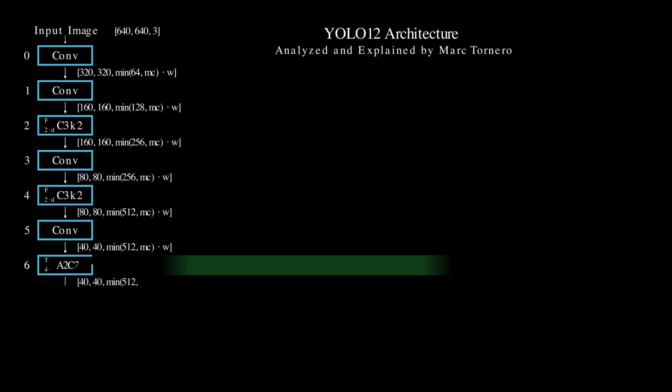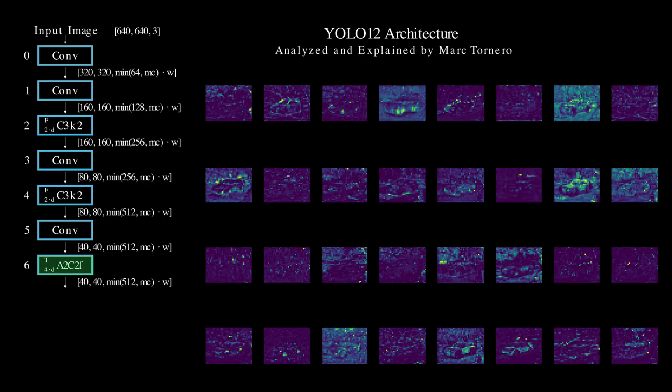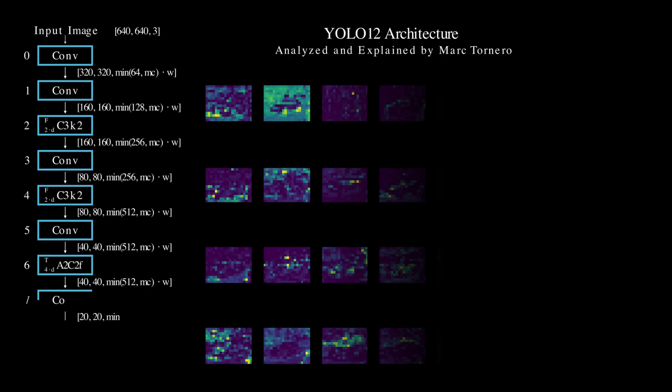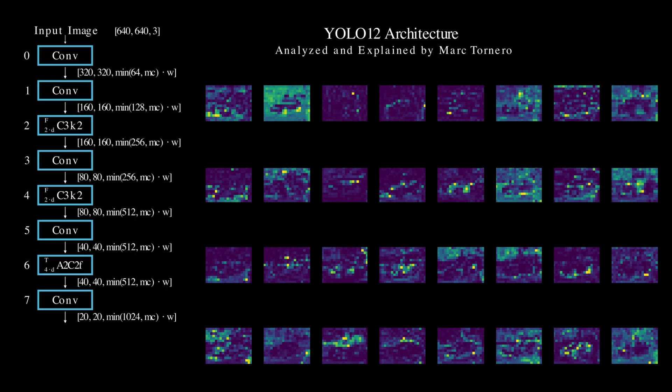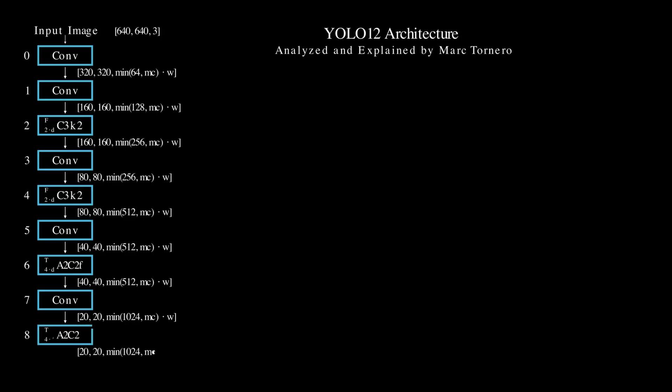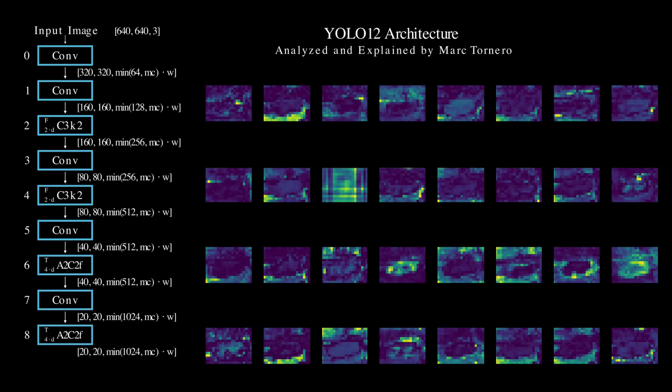The addition of the new A2C2F block builds on a previous module from its predecessor, which we'll discuss shortly. It introduces the area attention mechanism designed to enhance the model's ability to focus on the most relevant regions of the image. By splitting the image into sub-regions, it achieves better speed while maintaining high detection accuracy.